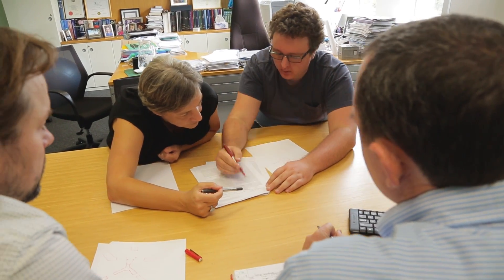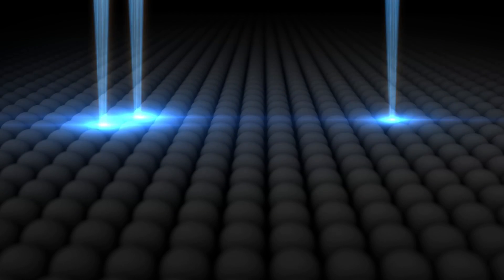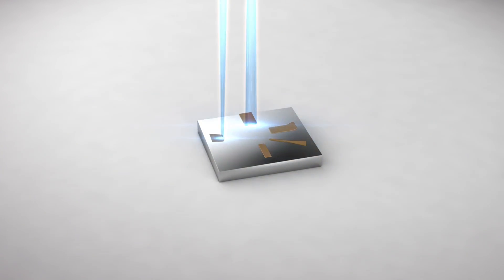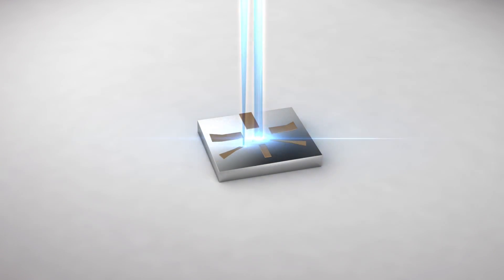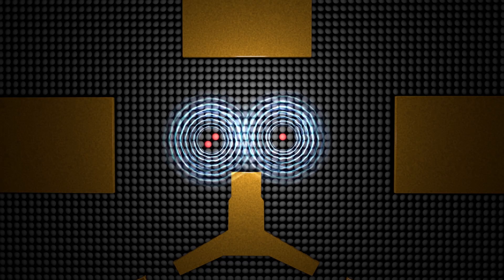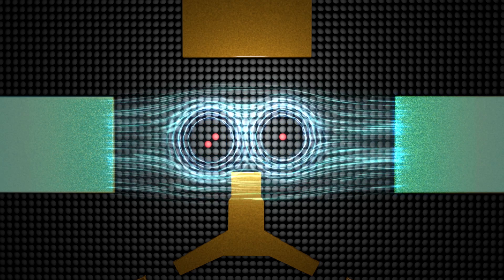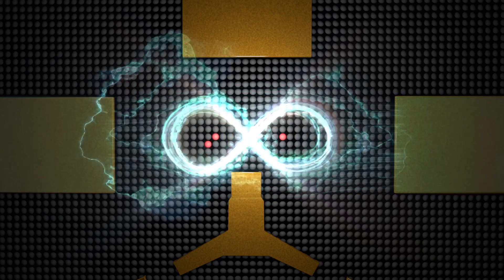So we placed two qubits — one made of two phosphorus atoms and another made of a single phosphorus atom — just 16 nanometers apart in a silicon chip. Using electrodes that were patterned onto the chip with similar precision techniques, we were able to control the interactions between these two neighboring qubits so that the quantum spins of the electrons became correlated.